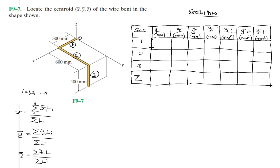The length of section one is 300 millimeters, section two is 600 millimeters, and section three is 400 millimeters. The total length is 1300 millimeters. Now, what's the x-centroid for each section?